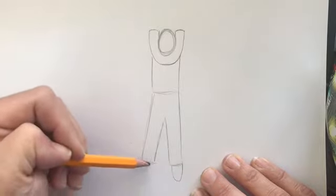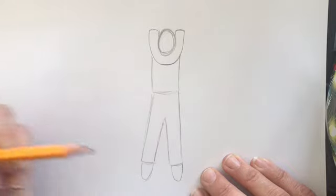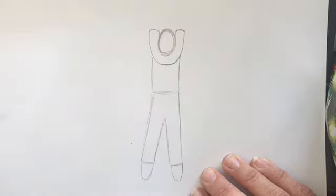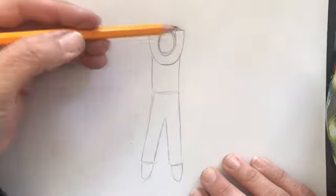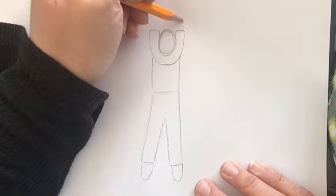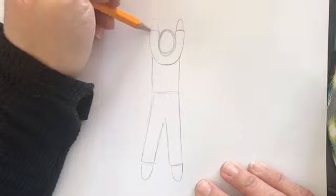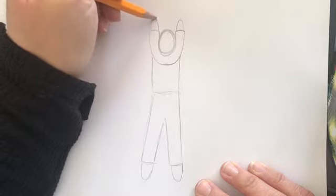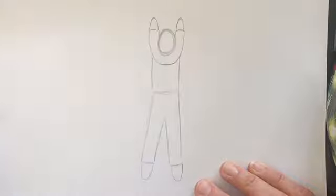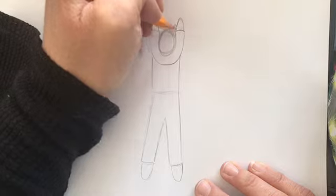They're not all the way ovals, they're kind of half ovals for your feet. Now what I'm going to do is I'm going to go back up to the top of my arms and put a little oval for hands. It's a half oval again.